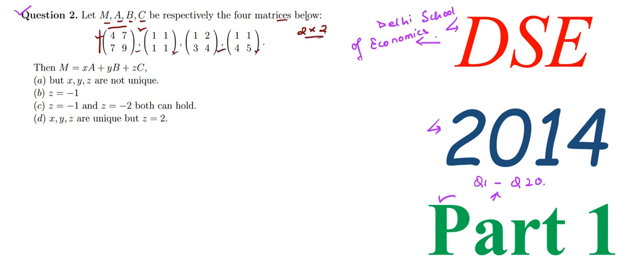Our first matrix is M, second is A, third is B, and this one is C. So here we have four matrices, and here we have been given an equation which is then M equals xA plus yB plus zC. This equation has been given.